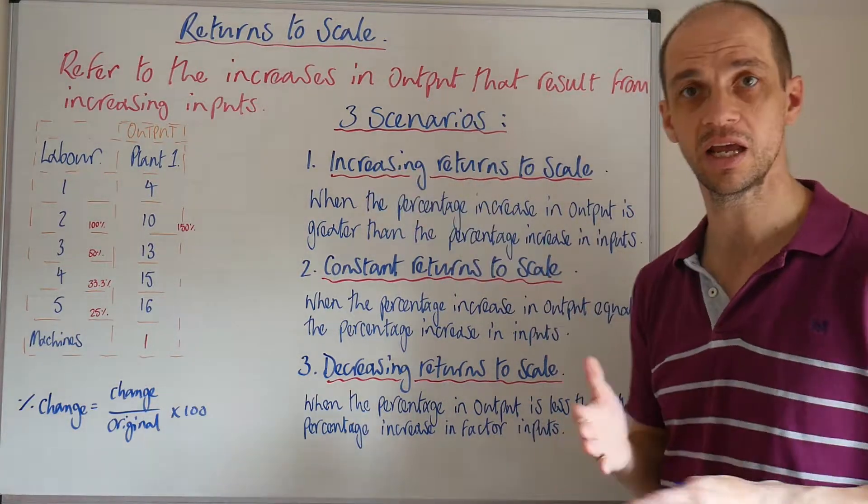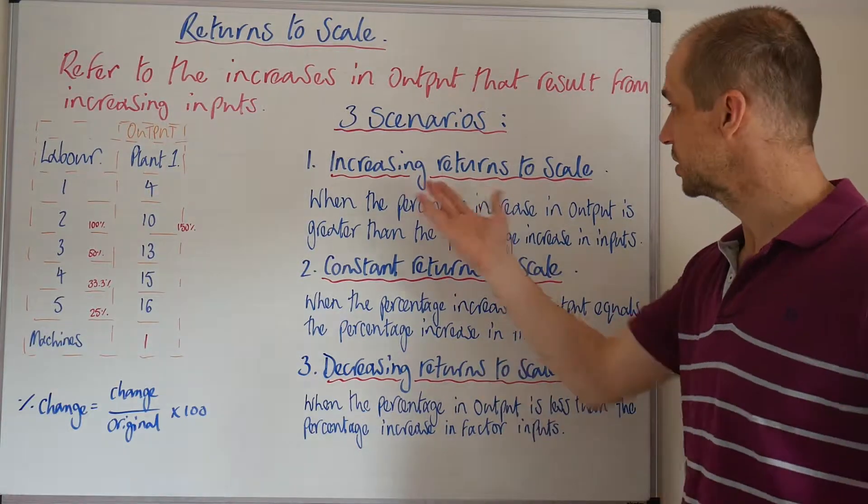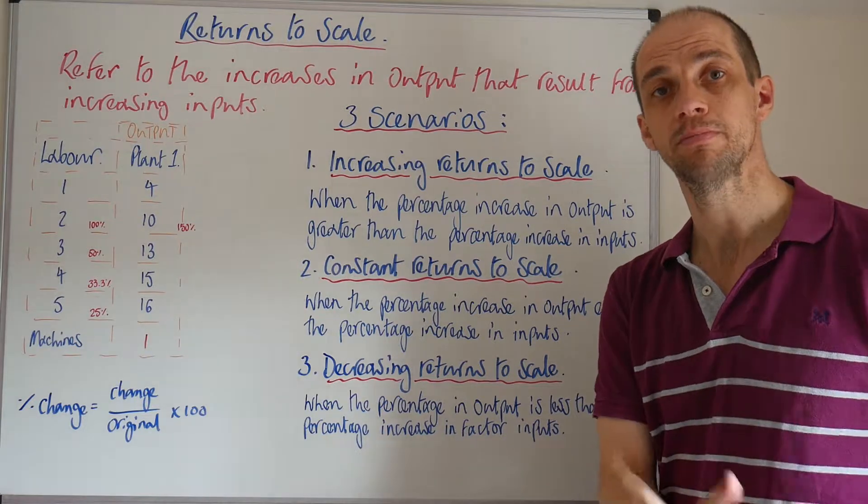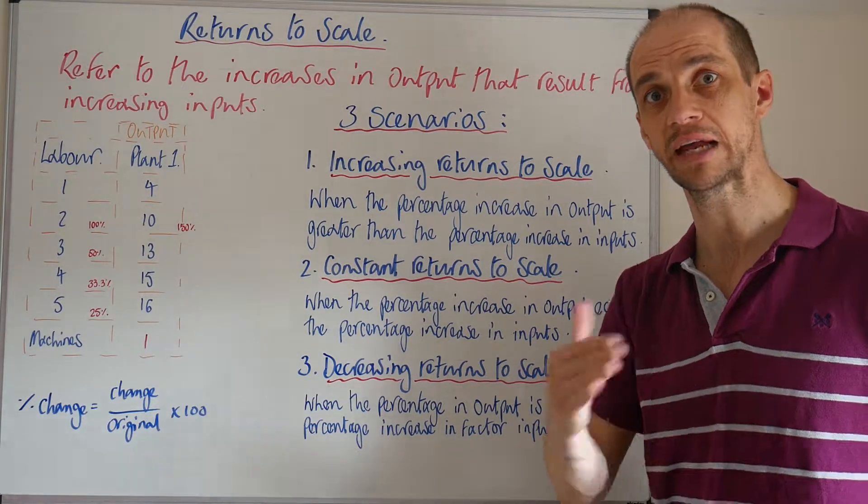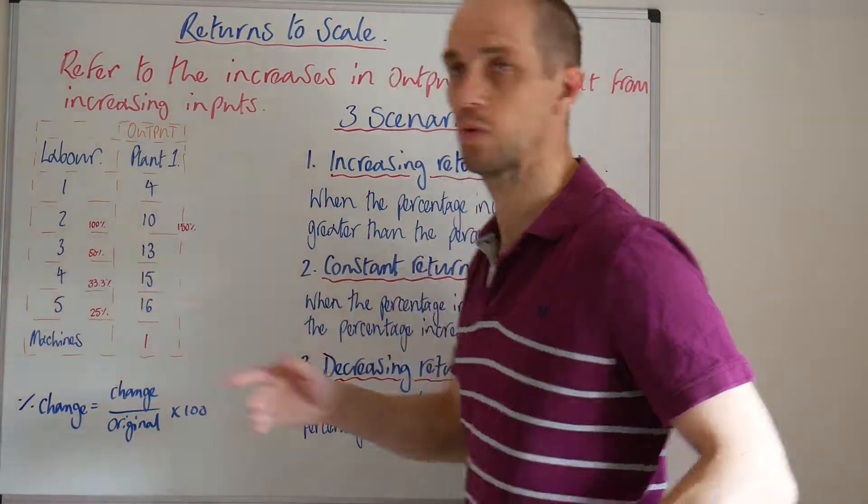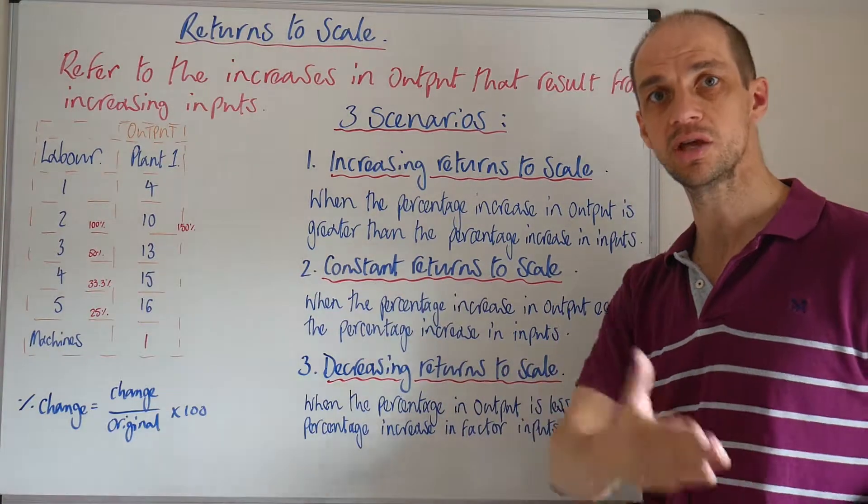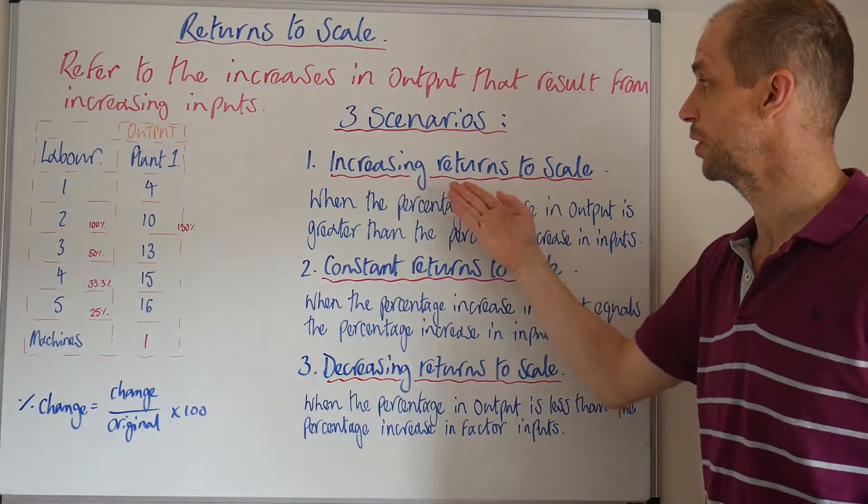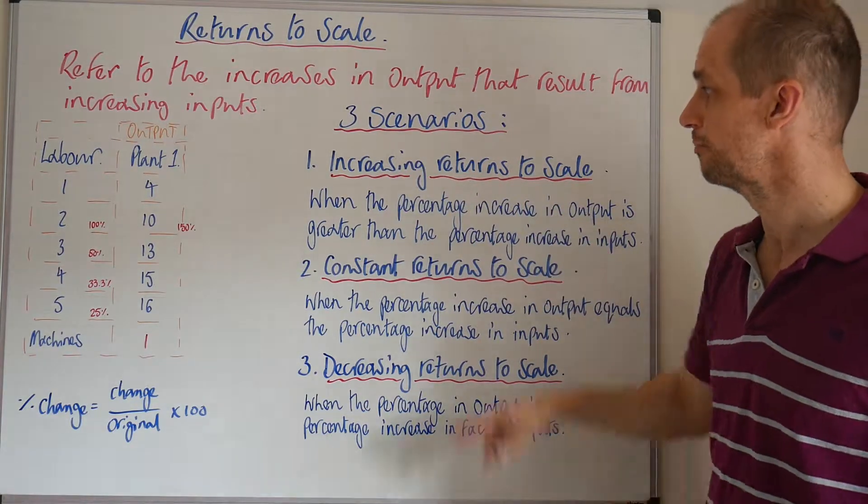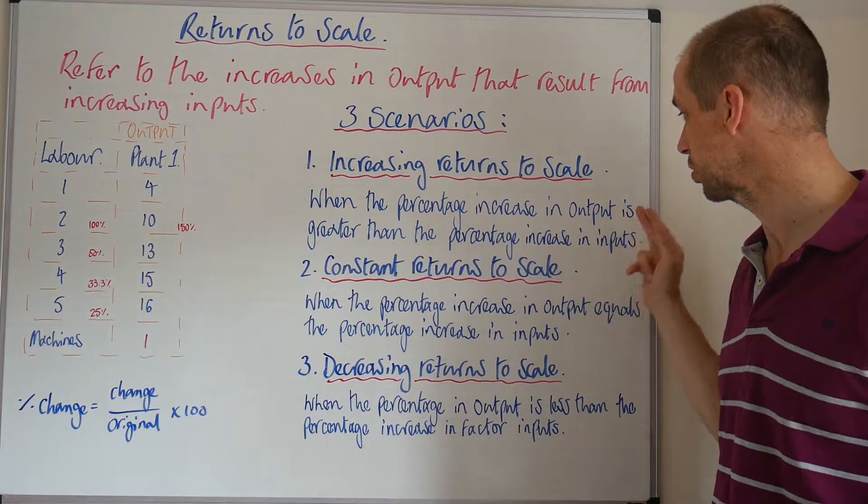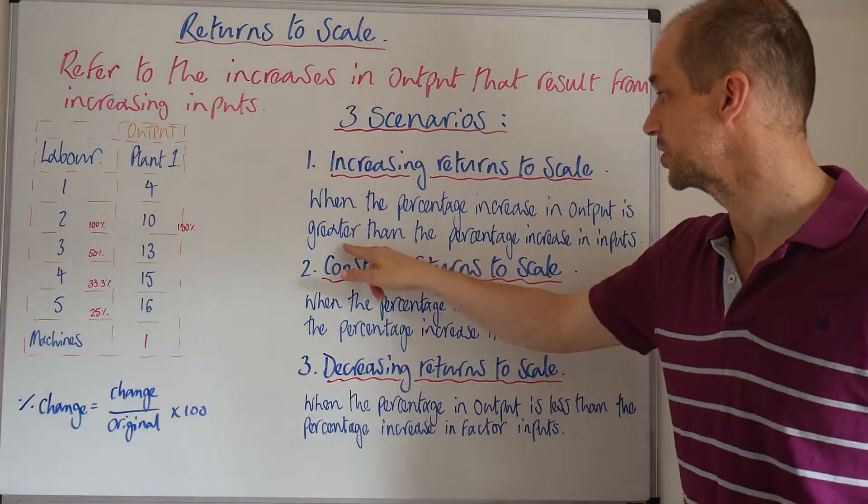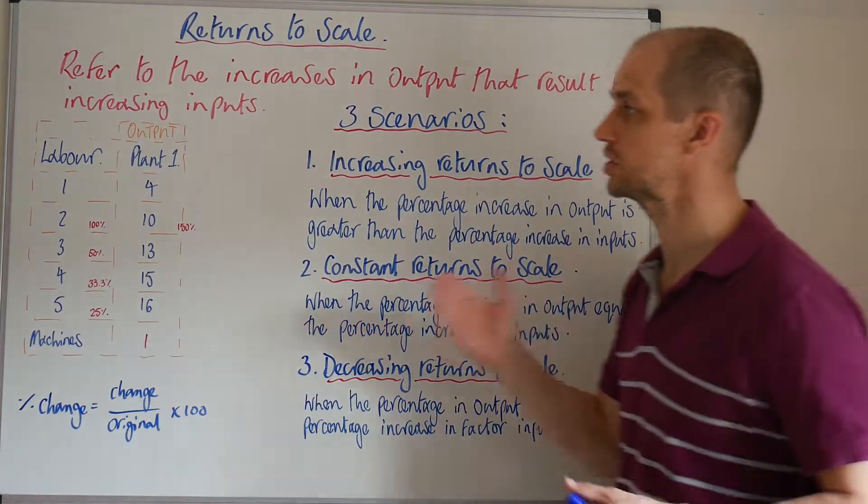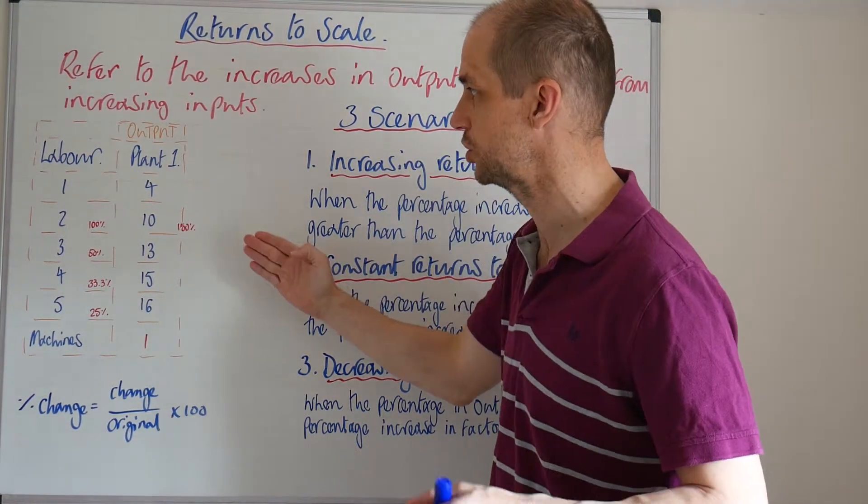and that is firstly increasing returns to scale. This is what you are likely to see as the firm begins to put in factor inputs, whether they are labour or capital. As they utilise more labour or capital initially, the firm is likely to experience increasing returns to scale. This is when the percentage increase in output is greater than the percentage increase in inputs. So let's take a little look at that just here.